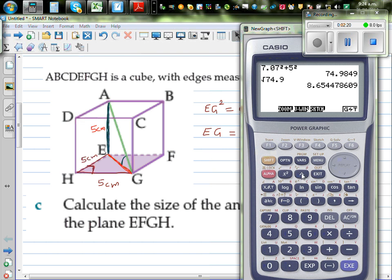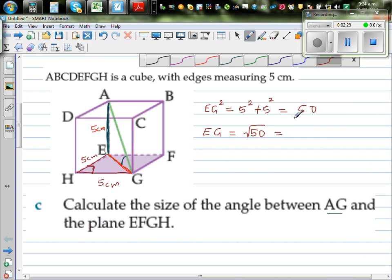Square root of 50. So square root of 50 is 7.07. So this is 7.07.